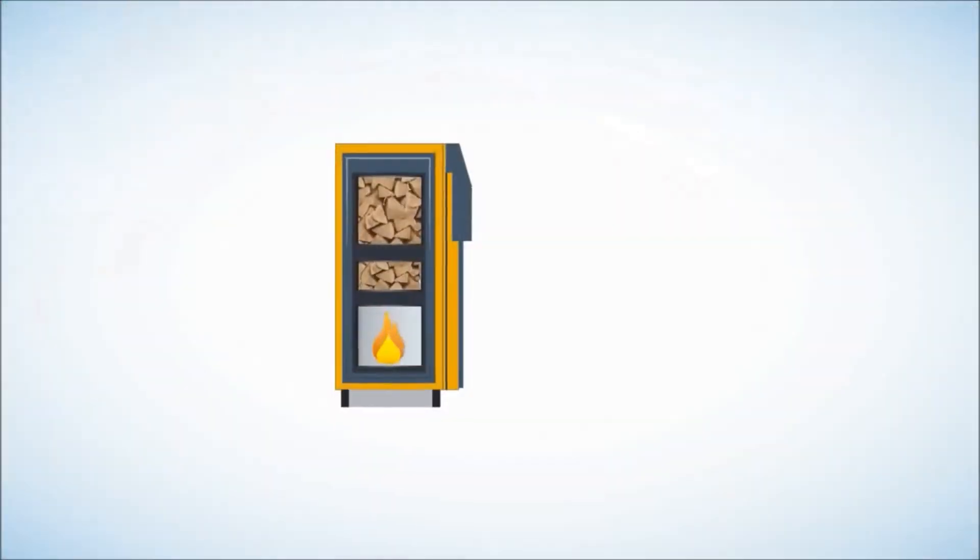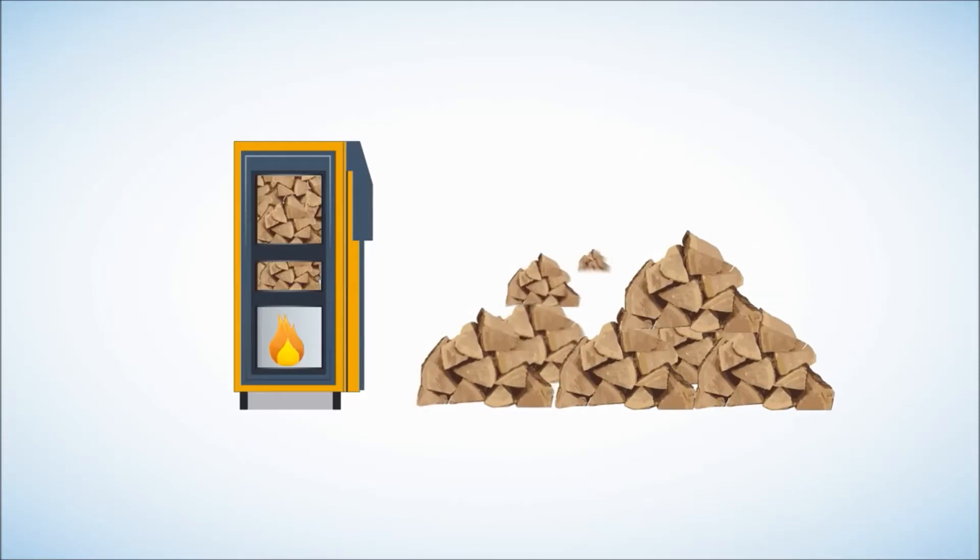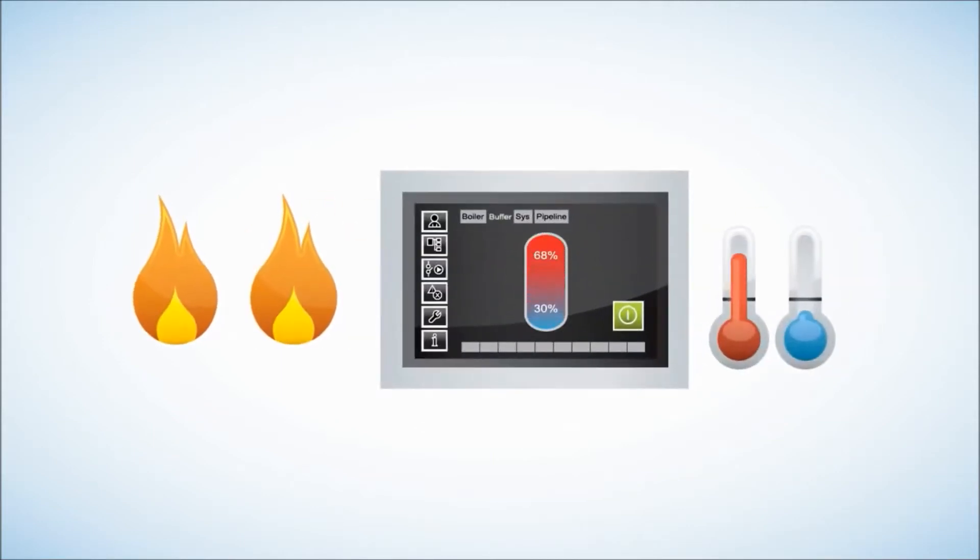The main advantage to using logs in a biomass boiler is that they are easily available. A fully loaded burn chamber can burn for up to 18 hours when the system is in low demand and keep the hot water and heat ticking over. Automatic controls manage the ferocity of the burn and make the fuel last longer.